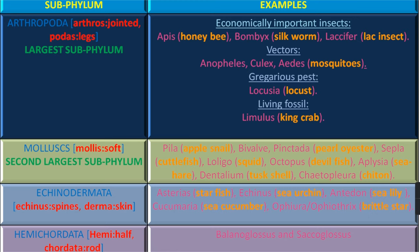The vectors are Anopheles, Culex, and Aedes, which are mosquitoes. Gregarious pests are Locusta, which is Locust, and the living fossil is Limulus, the King Crab.